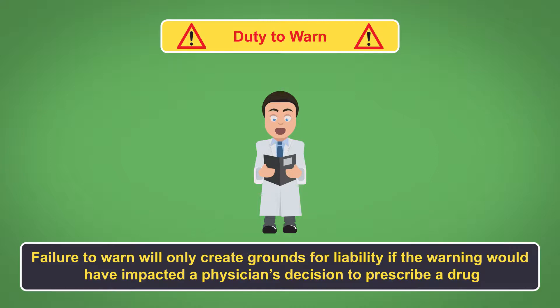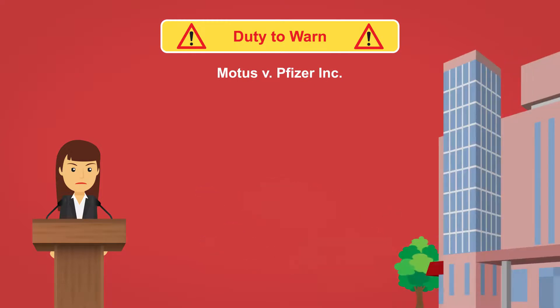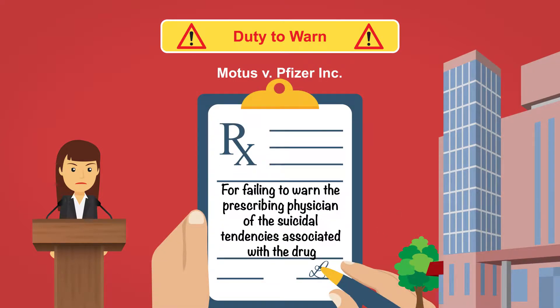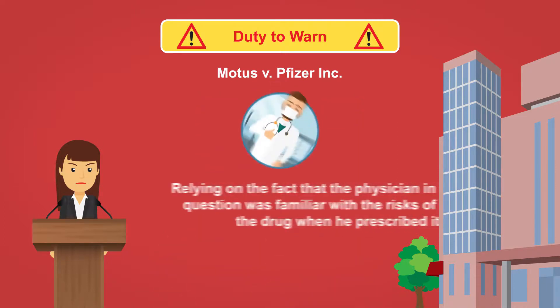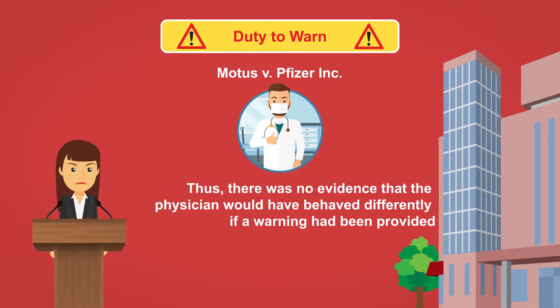Note, however, that failure to warn will only create grounds for liability if the warning would have impacted a physician's decision to prescribe a drug. In one case, the widow of a depressed patient who committed suicide after taking an antidepressant sued the drug manufacturer for failing to warn the prescribing physician of the suicidal tendencies associated with the drug. The court dismissed the action, relying on the fact that the physician in question was familiar with the risks of the drug when he prescribed it. Thus, there was no evidence that the physician would have behaved differently if a warning had been provided.